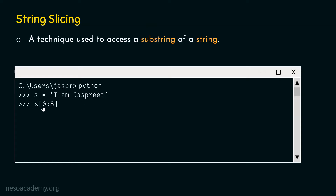Now, what does this mean? Within these square brackets, we first have to specify the first index or the start index of the substring which we want to access. After the colon, we need to specify the end index plus 1, or last index plus 1, of the substring which we want to access. The keyword here is last index plus 1. In this case, we are interested in accessing the substring 'I am just'. The starting index of this string is 0. That is why 0 is written here.